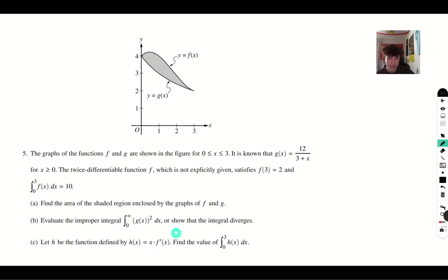And part c says, let h be equal to x times f prime of x. Find the value of the integral of h of x dx. So what we're going to do here is we're going to use integration by parts. So since we're integrating x f prime of x dx, we're going to make the u equal to the x. And then we're going to make the f prime of x dx the dv. And then from here, take the integral of both sides. You have v is equal to f of x. And du is equal to dx.